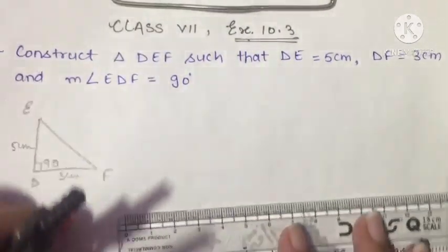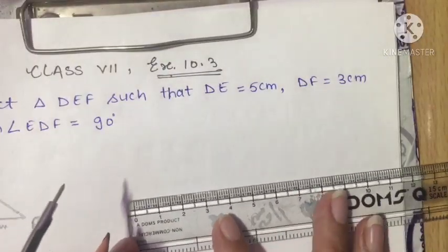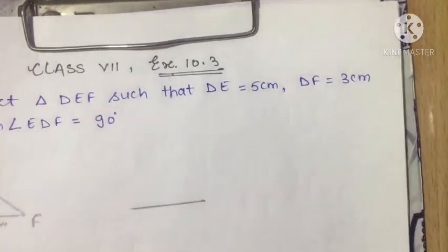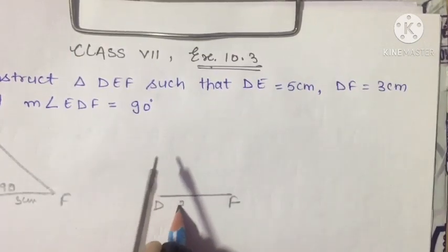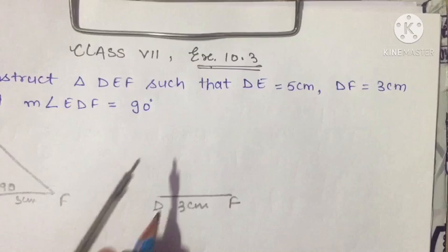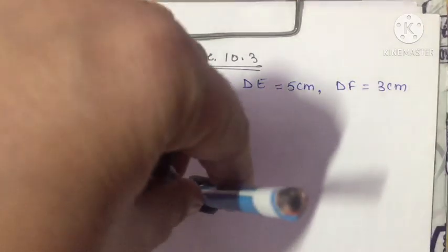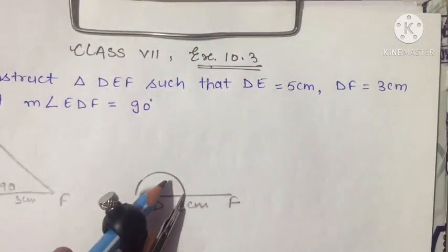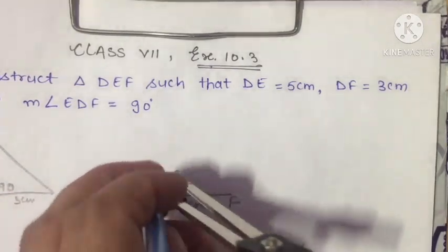Let us begin the construction. I have taken DF equal to 3 cm. Now at D, I will make an angle of 90 degrees. You can draw this with the help of a protractor or a compass. Using a compass, the first arc is at 60 degrees and the second arc will be at 120 degrees.